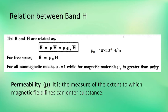In the electrostatics concept, it is epsilon. Permittivity is equal to — unit is Farad per meter. In this case, it is called inductance, related to permeability. Henry per meter.